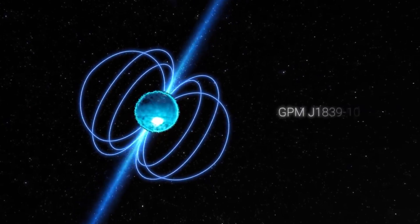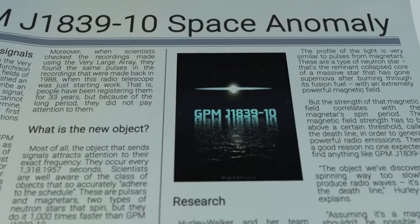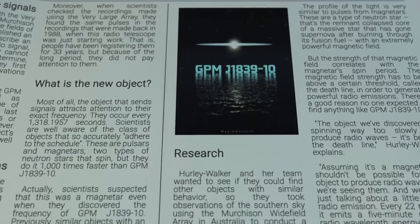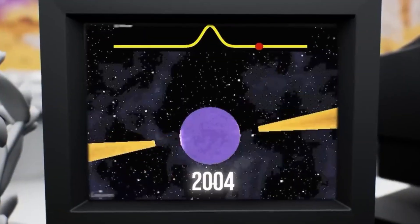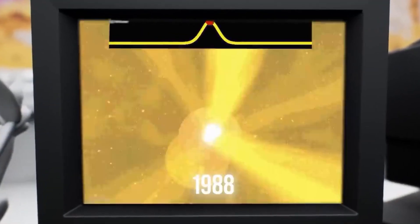But as they began to look deeper into records of past observations, they realized this signal had been arriving at Earth since at least 1988 with remarkable stability, far more stable than is expected for a pulsar rotating every 22 minutes.